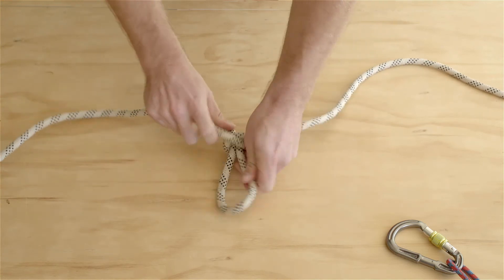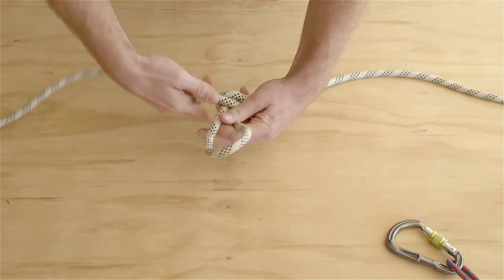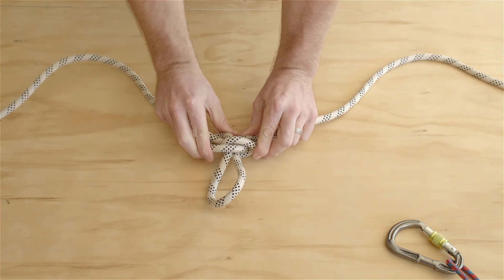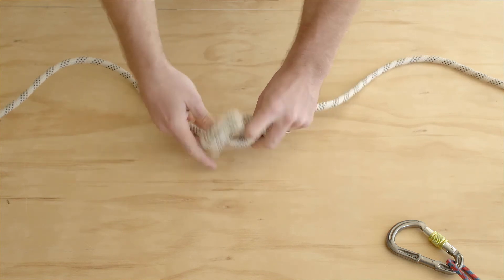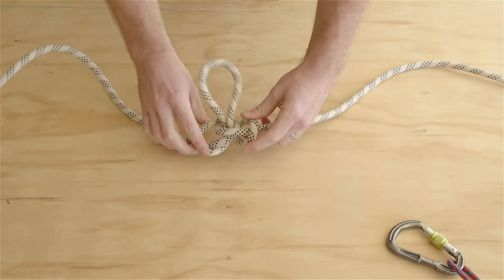Tighten your knot up and tidy it up. You can tell that you've tied the Alpine Butterfly correctly because you've got parallel ropes on one side and it's crossed over on the other.